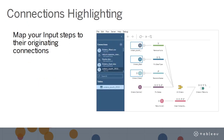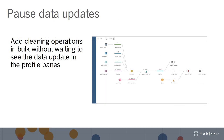While building your Prep Builder flows, you may occasionally want to change the connection attributes or credentials for your input steps. With this release, we are making it easier to quickly map your input steps to the originating connections in the Connections pane. Simply select one or more of your input steps, and all of the connections associated with those inputs will be highlighted in the Connections pane. Add cleaning operations in bulk without waiting to see the data update in the Profile panes — hit the Pause button, add your operations, and then click Resume to see the collected results of all the new steps you added.